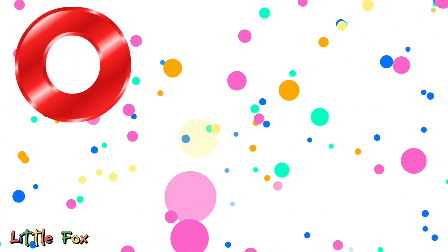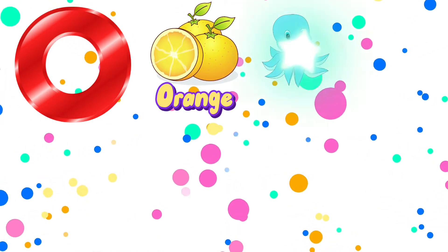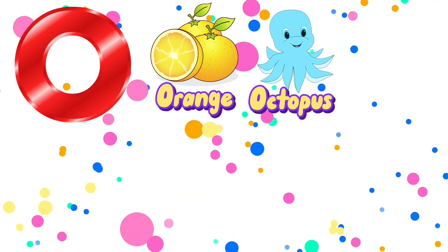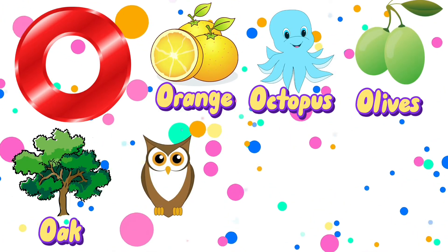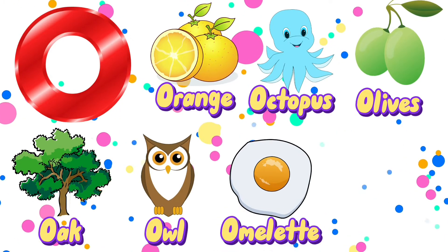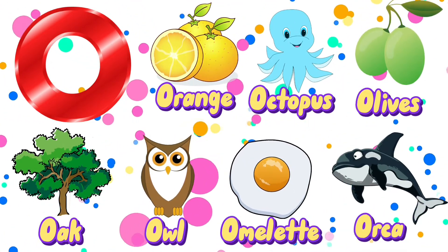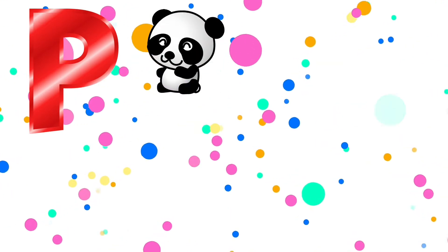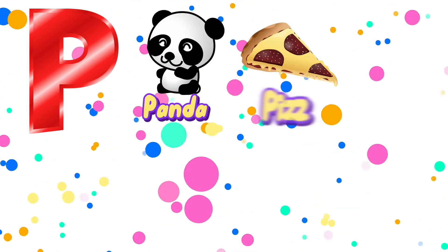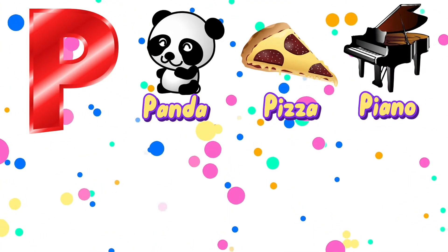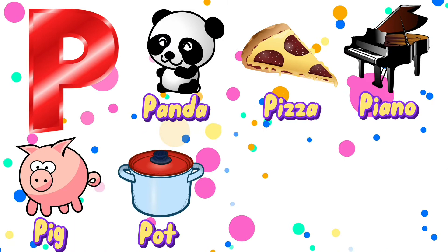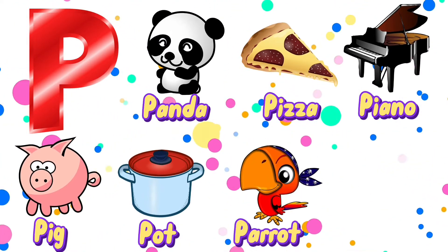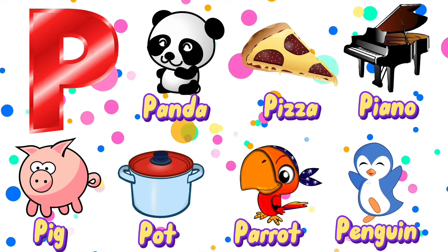O is for orange. P is for pig, pot, parrot.